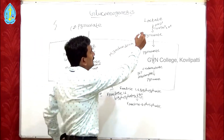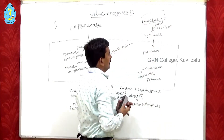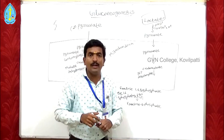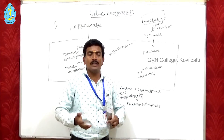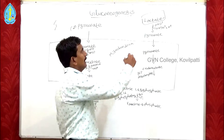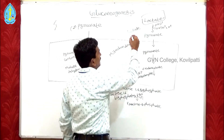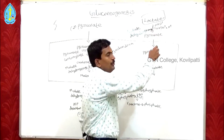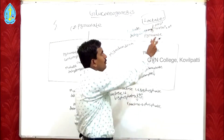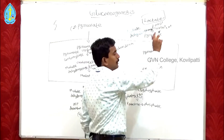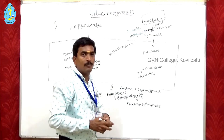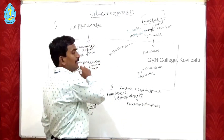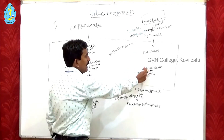If lactate is the precursor: during anaerobic fermentation, cells convert pyruvate or glycogen into lactate via the enzyme lactate dehydrogenase. With lactate dehydrogenase, NAD⁺ is reduced to NADH in the cytoplasm itself. So lactate is converted back into pyruvate in the cytoplasm. The converted pyruvate is then directly transferred to the mitochondria. In the mitochondria, pyruvate carboxylase converts pyruvate into oxaloacetate.